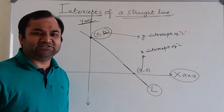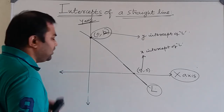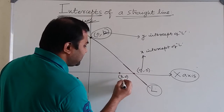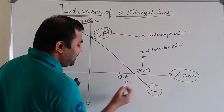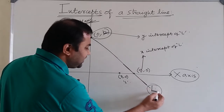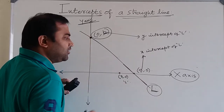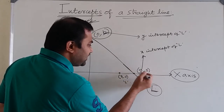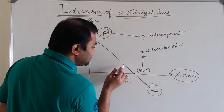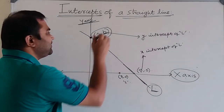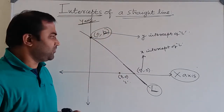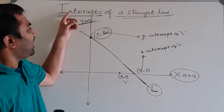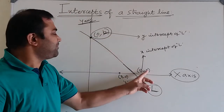Intercepts exist with respect to a straight line — you cannot consider a point like (3, 0) as the x-intercept of line L if you do not see line L passing through that point. So x-intercept means the x-coordinate in the point on the x-axis through which the line actually has to pass. Similarly for the y-intercept.